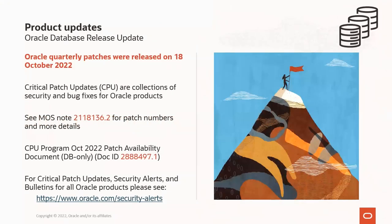Some announcements today: Oracle released the quarterly patch on or around the 18th of October. You can see My Oracle Support note 2118136.2 for patch numbers and more detail, along with a link to the October 2022 patch availability document, doc ID 2888497.1, for information on patch availability for the Oracle Database. You can also go to oracle.com/security-alerts for critical patch updates, security alerts, and bulletins.